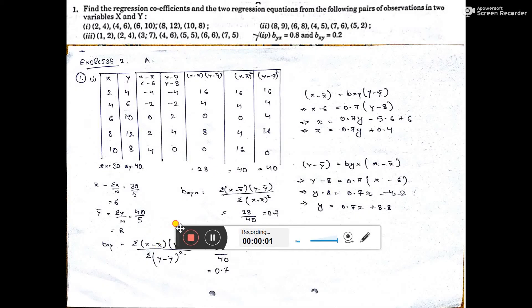Now see question number 1 part 1: find the regression coefficient and 2 regression equations from the following sphere of observation in 2 variables.